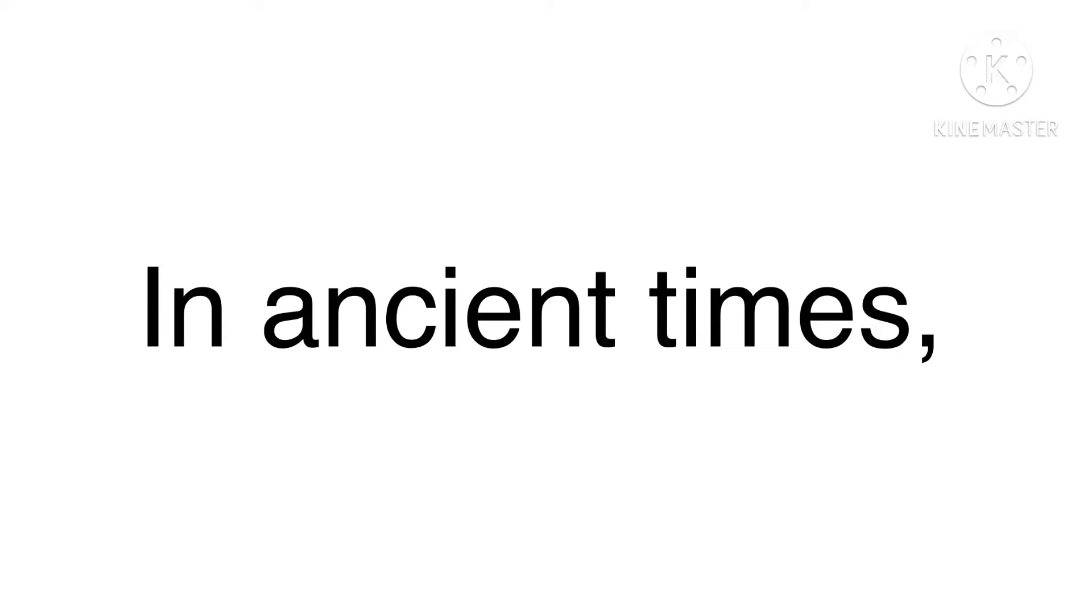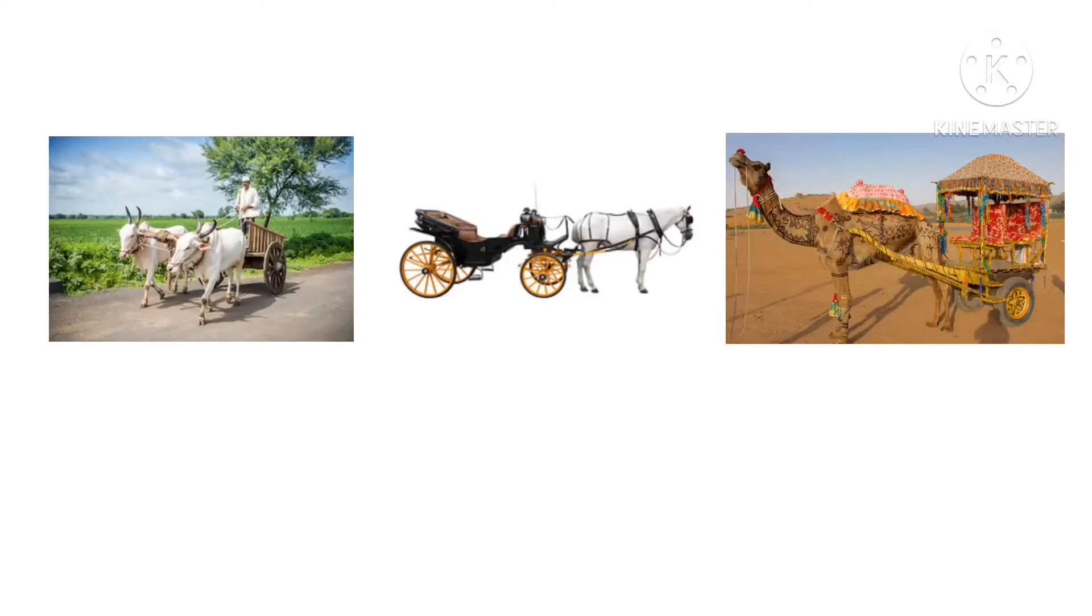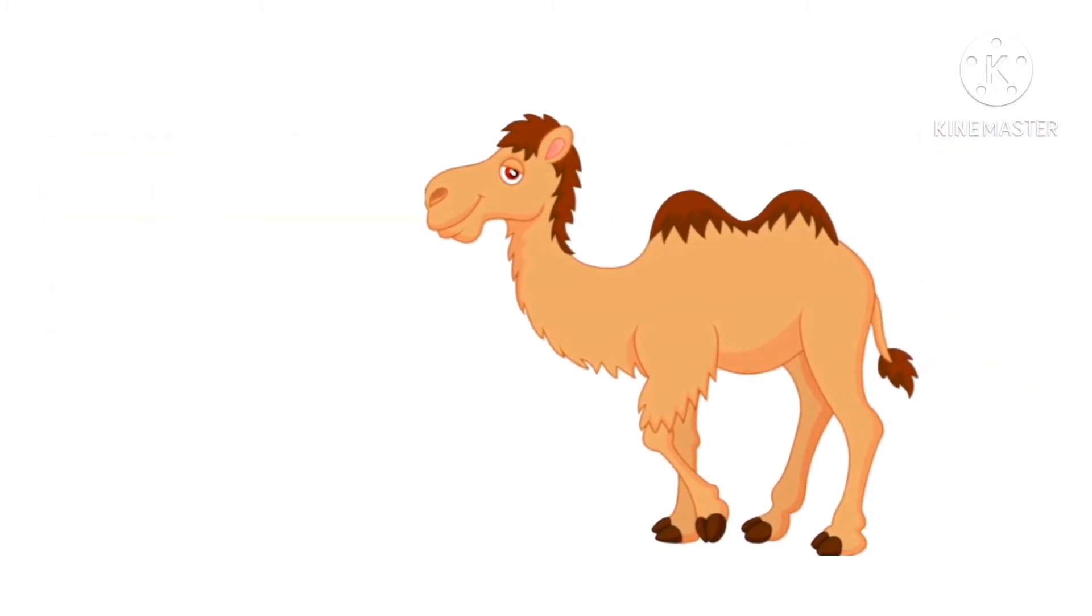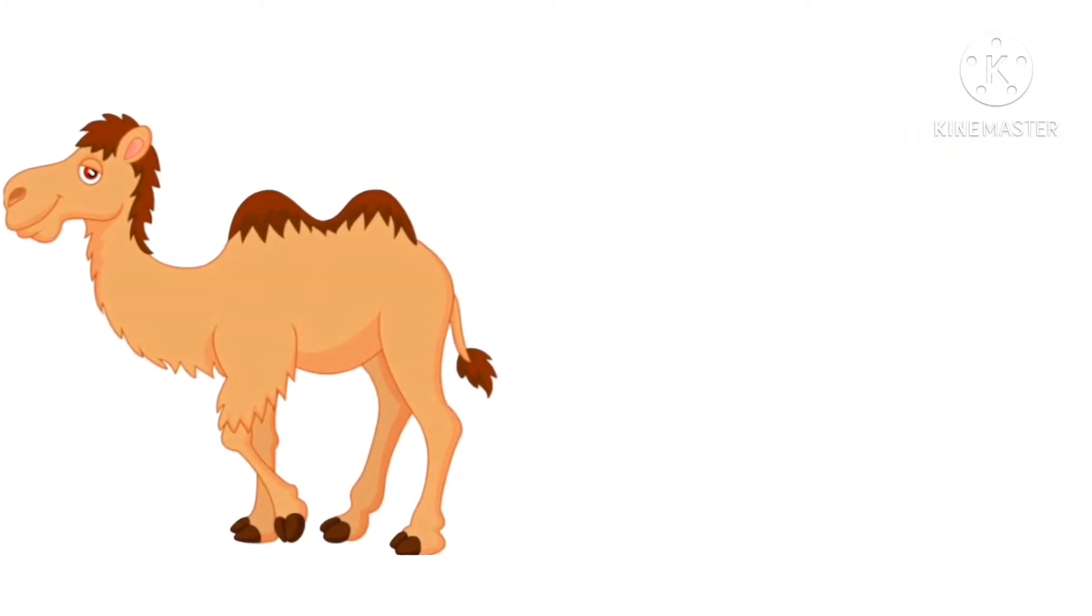In ancient times, bullock carts, tanga, camel carts or boats were the only means of transportation. Those were slow-moving vehicles. Do you know children, camels are known as the ship of the desert.